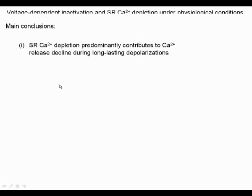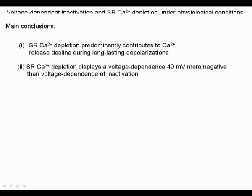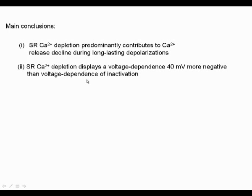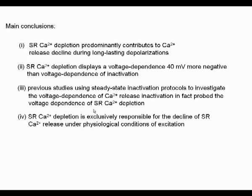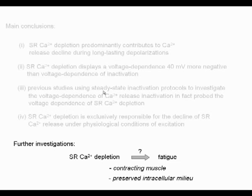To conclude, this study shows that SR calcium depletion predominantly contributes to calcium release decline during long-lasting activation of skeletal muscle. SR calcium depletion displays a voltage dependence 40 mV more negative than the voltage dependence of inactivation, implying that previous studies using steady-state inactivation protocols to investigate the voltage dependence of calcium release inactivation in fact likely probed the voltage dependence of SR calcium depletion. And finally, SR calcium depletion is the only process that leads to calcium release decline during strenuous exercise. It remains to be determined, however, whether SR calcium depletion also predominates in a contracting muscle during strenuous exercise leading to fatigue, using methods that preserve a physiological intracellular environment.